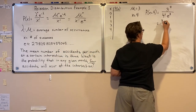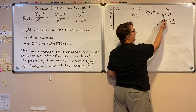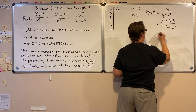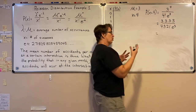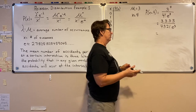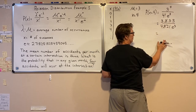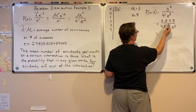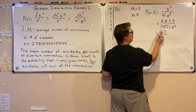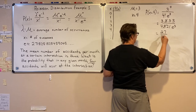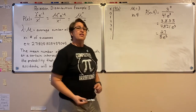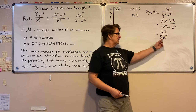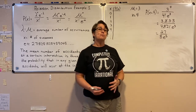Three to the fourth power is 3×3×3×3, and 4 factorial is 4×3×2×1. I can simplify before multiplying — the three in the numerator and one three from the denominator reduce. That leaves 3×3×3 = 27 on top, and 4×2×1 = 8 on the bottom. So we get 27 over 8 times e cubed. This is the exact form of that probability — leaving e as e keeps it exact.